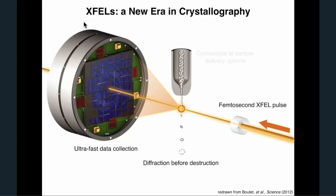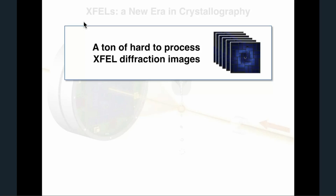Since we started on this project four or five years ago, there's been development of a cornucopia of sample delivery options, ranging from liquid jets to fixed target devices to drop-on-demand acoustic injectors. Overall, what you end up with when you perform any serial crystallography experiment is a ton of hard-to-process XFEL diffraction images. These are stills, obtained without rotating the crystal, from a variety of crystals, with varying quality of diffraction and varying unit cells. Many images have no signal at all, especially in jet experiments.